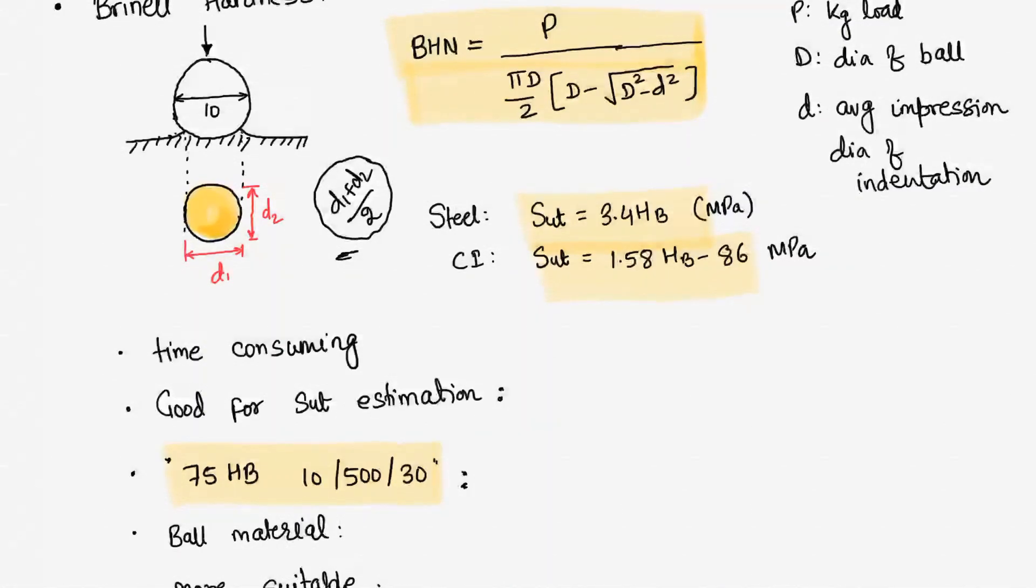It will be represented like 75 HB 10/500/30. What does this mean? This is giving me 75 BHN is the hardness value. The ball that was used has 10 mm diameter. The load that was applied is 500 kg force, and that 500 kg was applied for 30 seconds. That will also matter, for how much time am I applying the load on it.